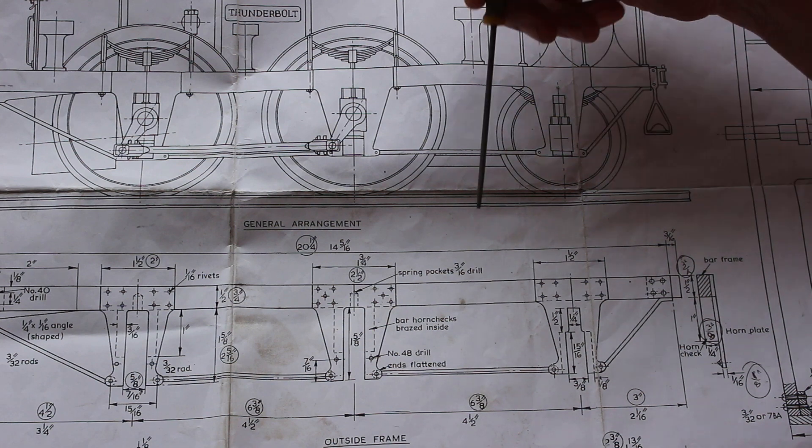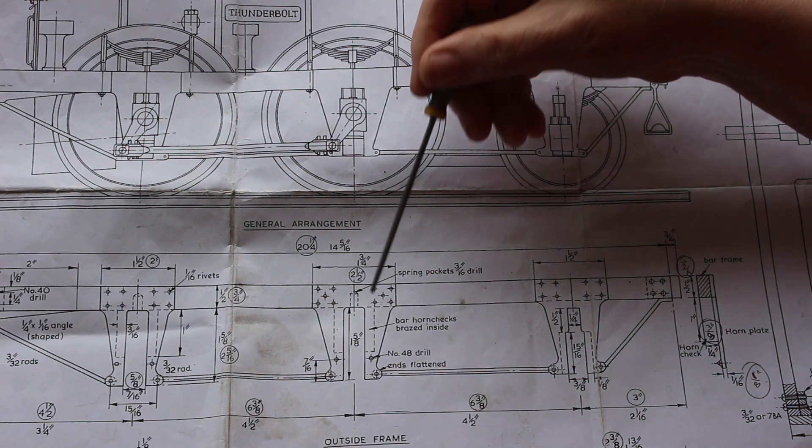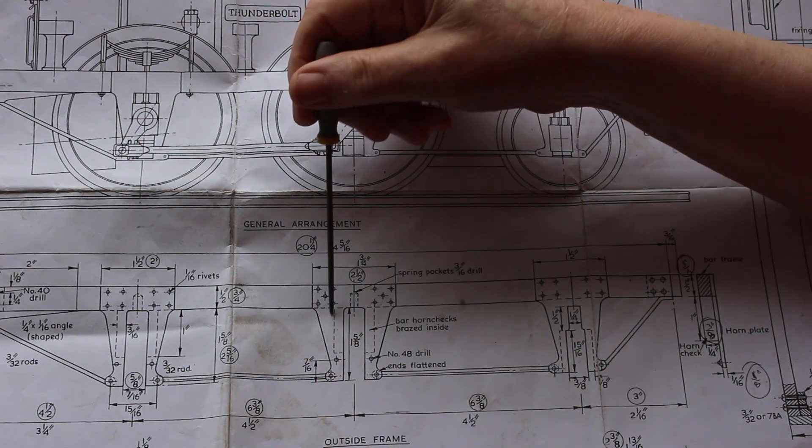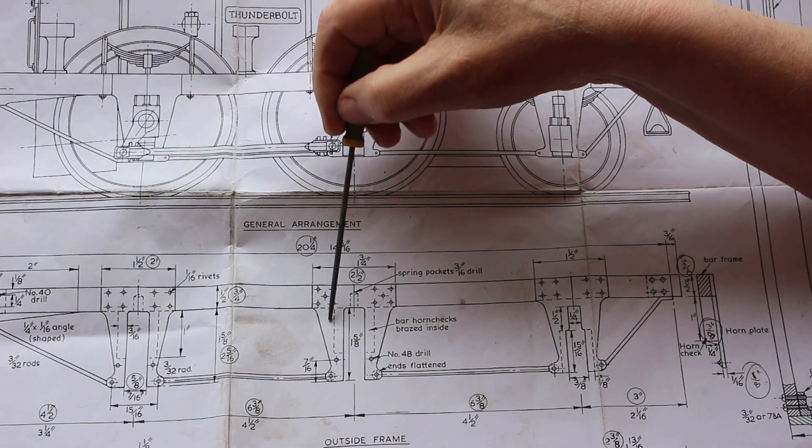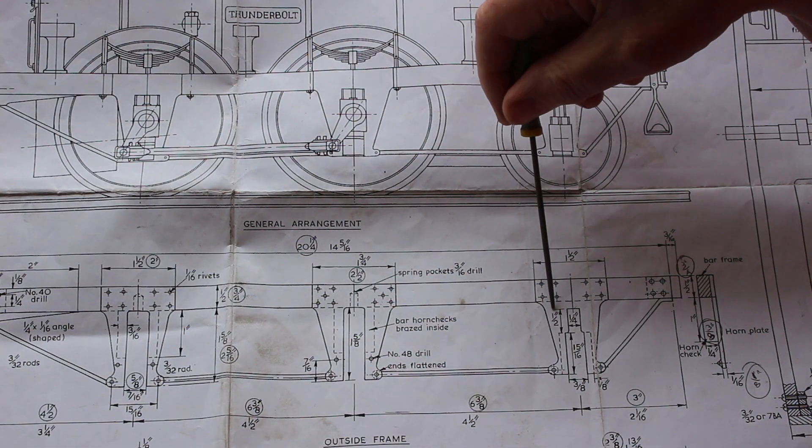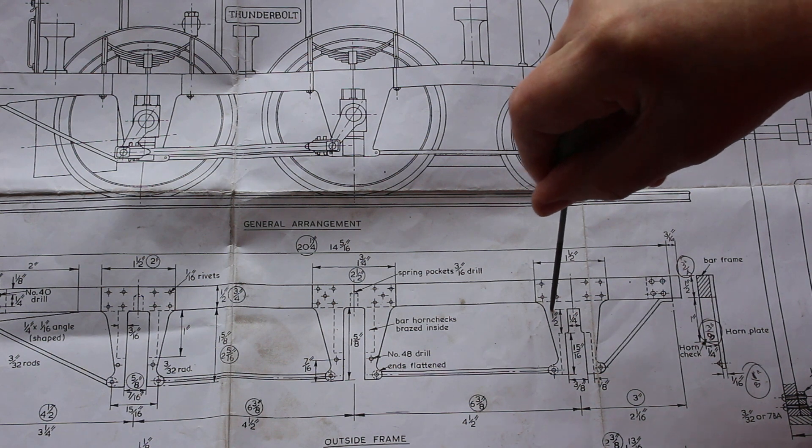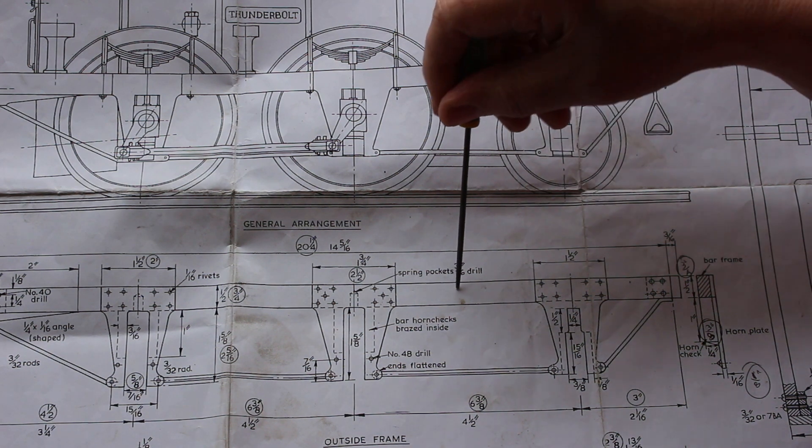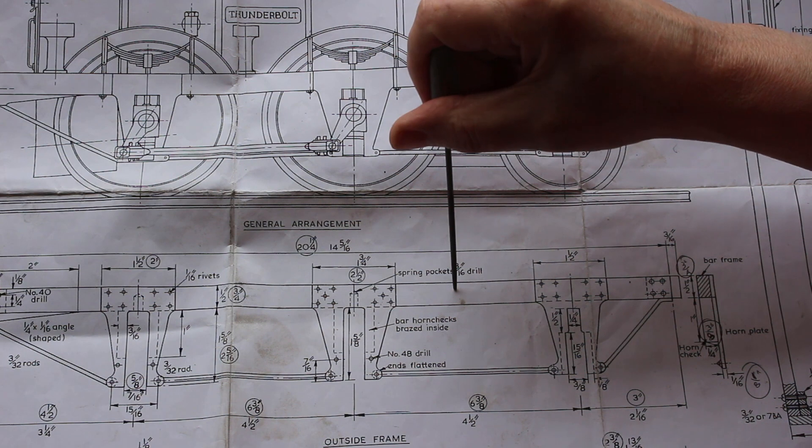In this video we're going to make a start on the horn plates. We've got two main horn plates for the driving wheels and another horn plate for the trailing wheels at the rear. These are attached to the frame which we made in an earlier video.